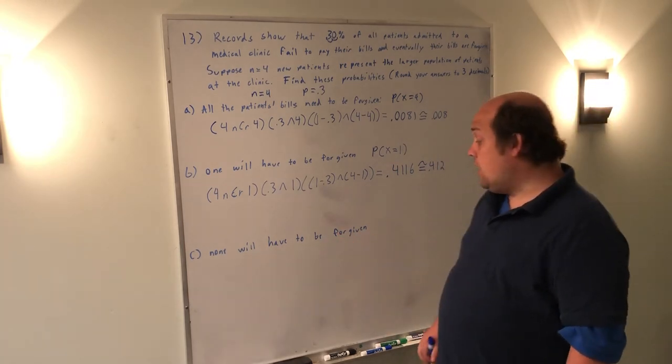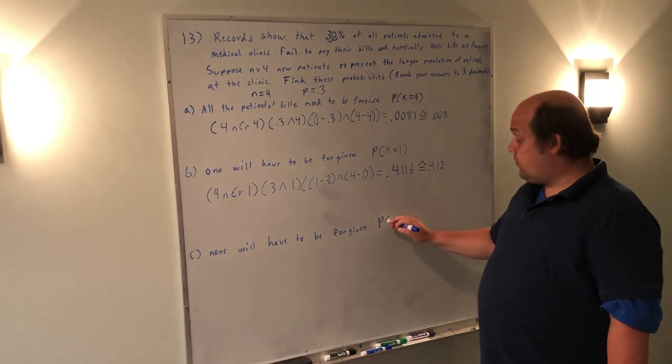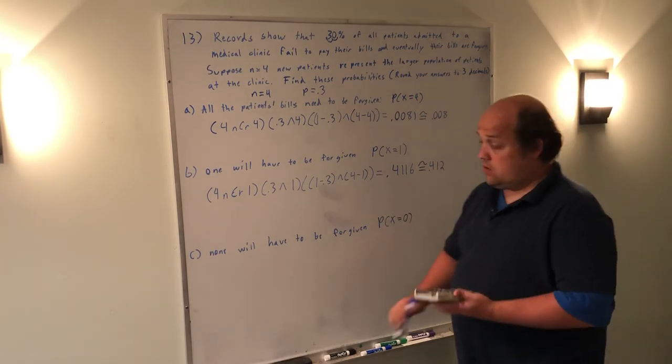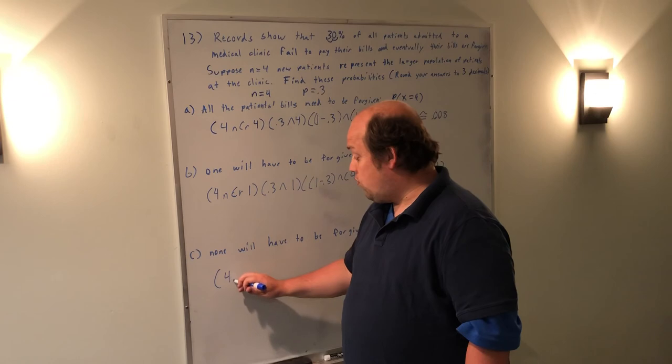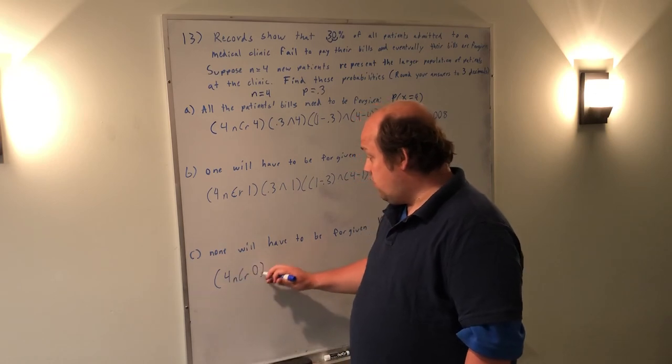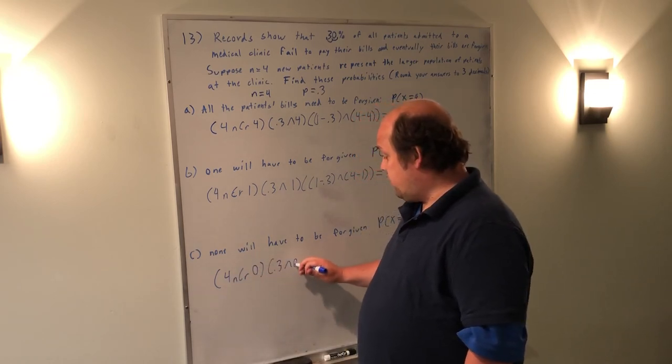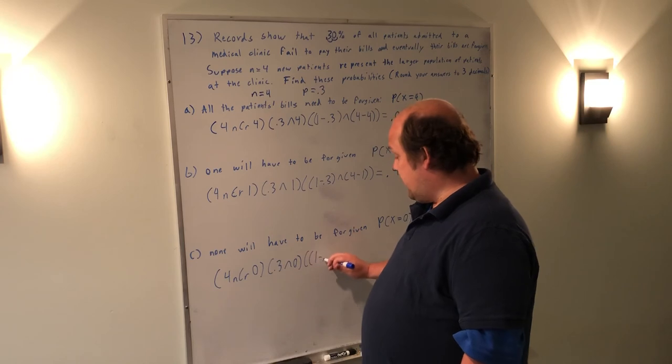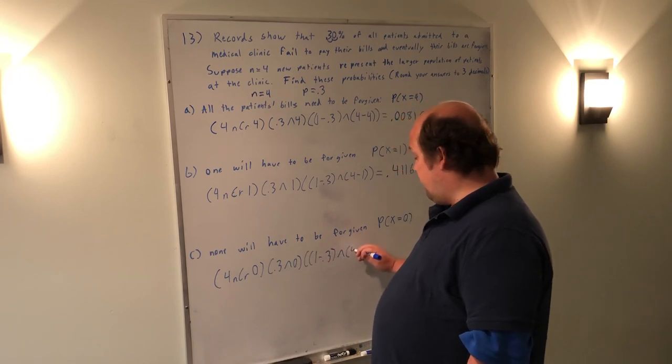Part C, none will have to be forgiven. That's really asking, what's the probability X equals 0? To do that, it would be 4 NCR 0, times 0.3 to the power of 0, times 1 minus 0.3 to the power of 4 minus 0.